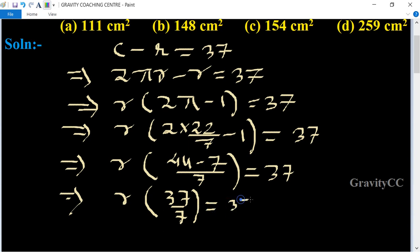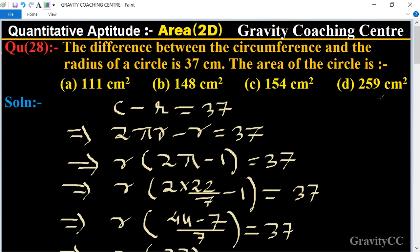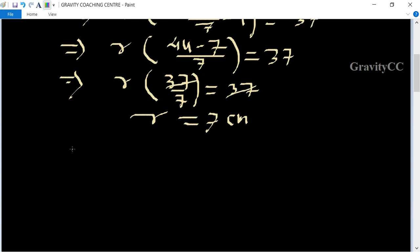So 37 and 37 cancel, therefore r = 7 centimeters. So what is the area of the circle?